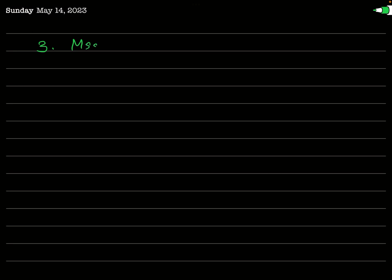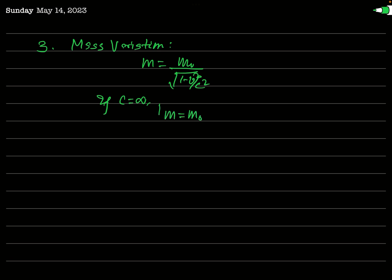Similarly, consider the case of relativistic mass variation. The mass variation formula from special relativity is M = M₀ / √(1 − V²/C²). If again C is infinity, then M will simply equal M₀ — it means there is no relativistic mass variation. So Newtonian mechanics does not fail.